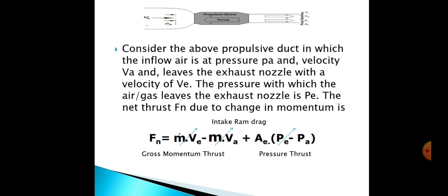Consider the above propulsive duct in which the inflow air is at pressure Pa and velocity Va, and leaves the exhaust nozzle with a velocity of Ve. The pressure with which the air or gas leaves the exhaust nozzle is Pe. The net thrust Fn due to change in momentum is written as Fn = ṁVe - ṁVa + Ae(Pe - Pa).